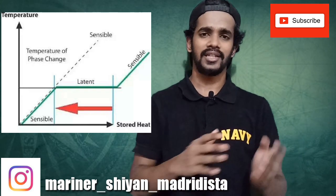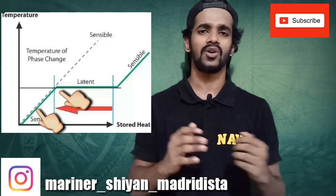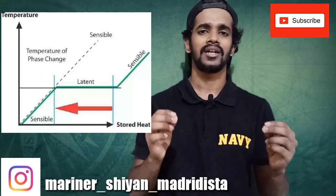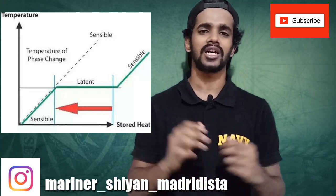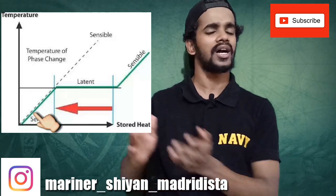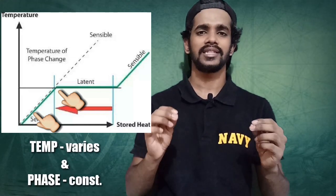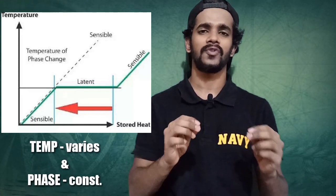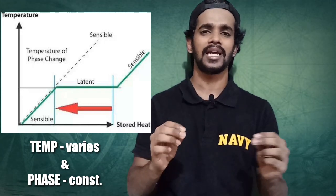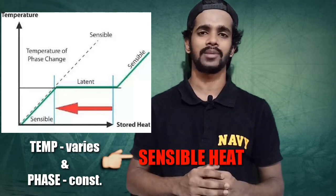This change in temperature from 30 to 100 degrees Celsius is known as sensible heat, which you can sense and measure by a temperature measuring device like a thermometer. As the temperature keeps on varying from 30 to 100 degrees Celsius, the phase remains constant — the water is still in liquid form. The phase is constant but the temperature keeps on varying. That's your sensible heat.